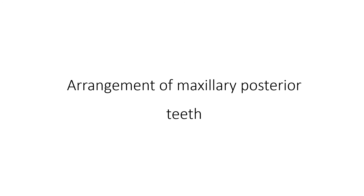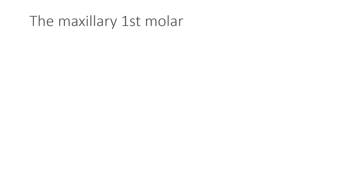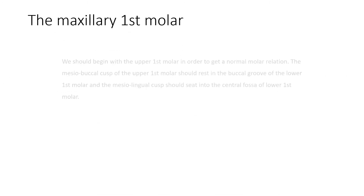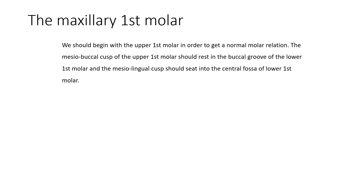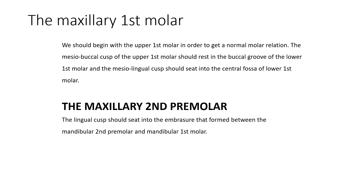Arrangement of the maxillary posterior teeth: we should begin with the upper first molar in order to achieve a normal molar relation. The mesiobuccal cusp of the upper first molar should rest in the buccal developmental groove of the lower first molar, and the mesiolingual cusp should be set in the central fossa of the lower first molar.